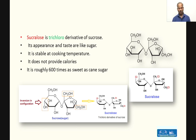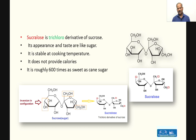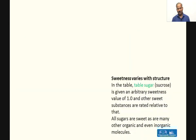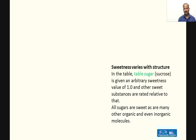The trichloro derivative of sucrose is sucralose. When converting sucrose to sucralose, note the changes: there is an inversion in configuration at the glucose unit. Specifically, one chlorine is attached at the 4th carbon of the glucose unit, one chlorine at the 1st carbon of the fructose unit, and one chlorine at the 6th carbon of the fructose unit — this is how sucralose is formed.